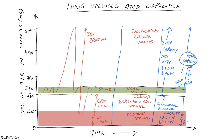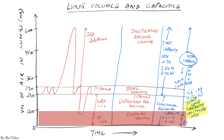If we add residual volume to vital capacity, we get the total lung capacity — the sum of all four volumes: inspiratory reserve volume, tidal volume, expiratory reserve volume, and residual volume. Total lung capacity is 6 liters for men and about 4.2 liters for women. So to recap: tidal volume, inspiratory and expiratory reserve volumes, residual volume, inspiratory capacity, functional residual capacity, vital capacity, and total lung capacity.